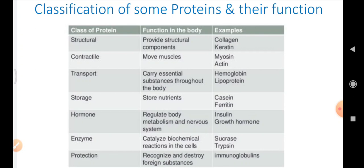What are the transport proteins? They can carry essential substances throughout the body and example is hemoglobin and lipoproteins. Storage proteins can store nutrients, for example, casein and ferritin.